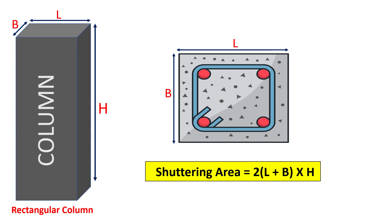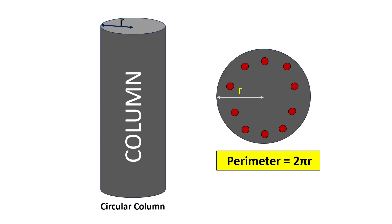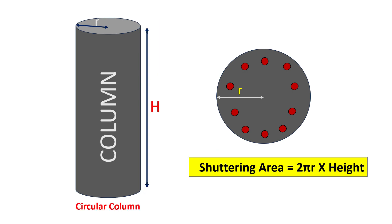Finally, let's explore the circular column. Its perimeter or circumference is given by 2π times the radius of the column. The formula for the shuttering area of a circular column is: 2πr × height of column.